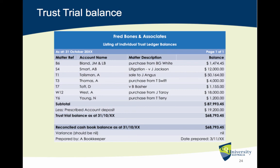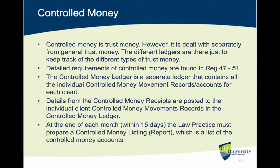The next category to briefly look at is controlled money. Controlled money is a form of trust money, however it's dealt with separately from general trust money — different ledgers keep track of different types of trust money. The requirements for controlled money are found in Regulations 47 through to 51. The controlled money ledger contains all individual controlled money movement records for each client. Details from the controlled money receipts are posted to the individual client records, and at the end of each month — within 15 days — the law practice must prepare a controlled money listing report.